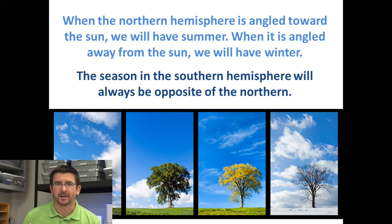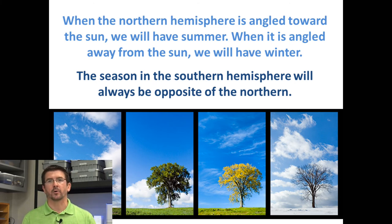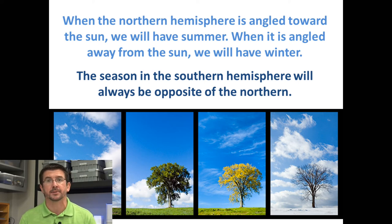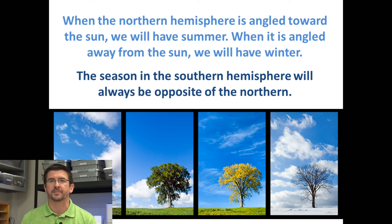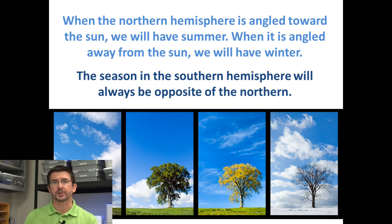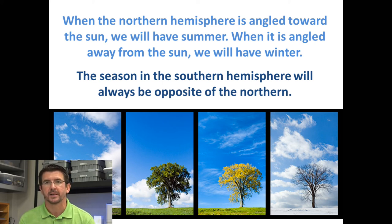In the summertime the days are longer — where I live, we can go out until about 8:30 or 9 o'clock, sometimes even later, and it'll still be light outside. Because we're tilted towards the sun, we're getting more hours of daylight during those summer months. And because we're getting more sunlight in those months, it's causing warmer temperatures for that hemisphere of the Earth.